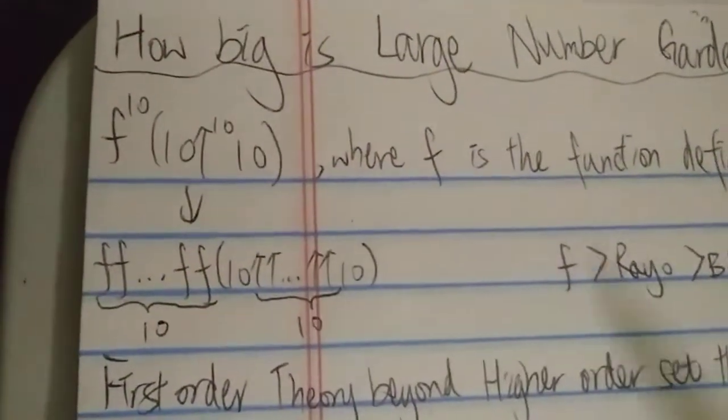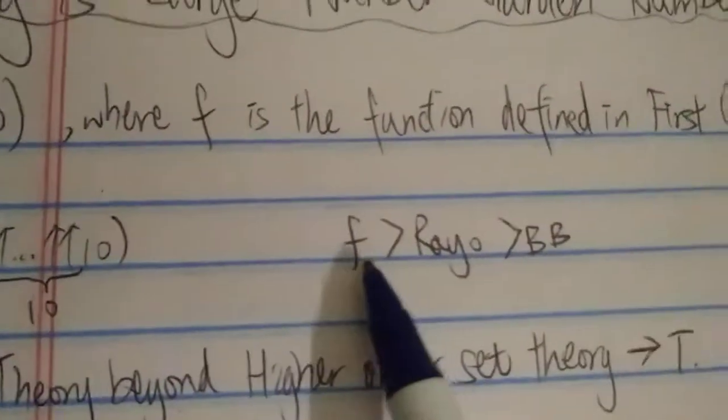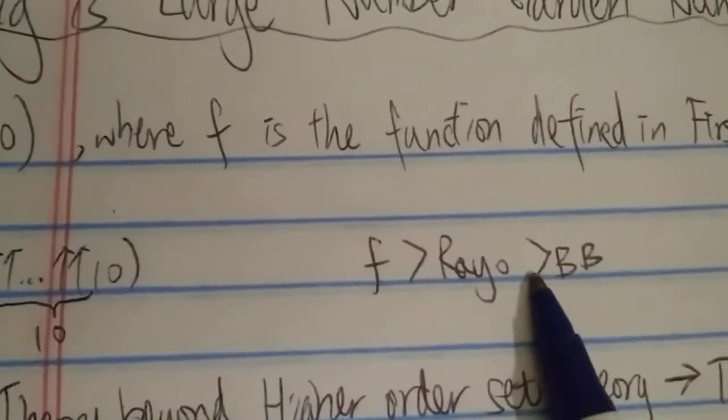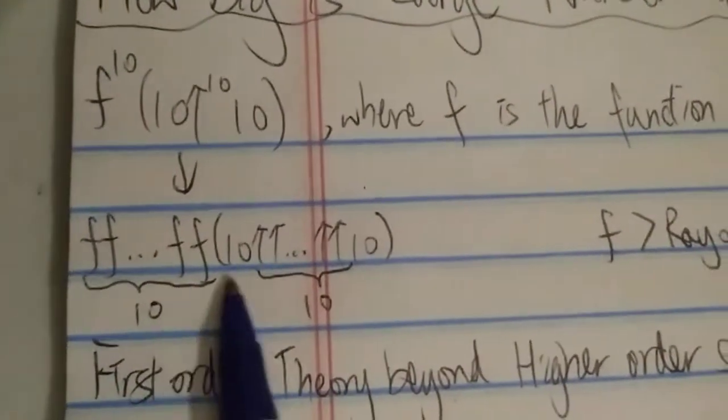So already you can tell, it's much more powerful than Rayo's number. Consider f is much, much, much stronger than Rayo's function, and in turn, much, much, much stronger than the BC Beaver.